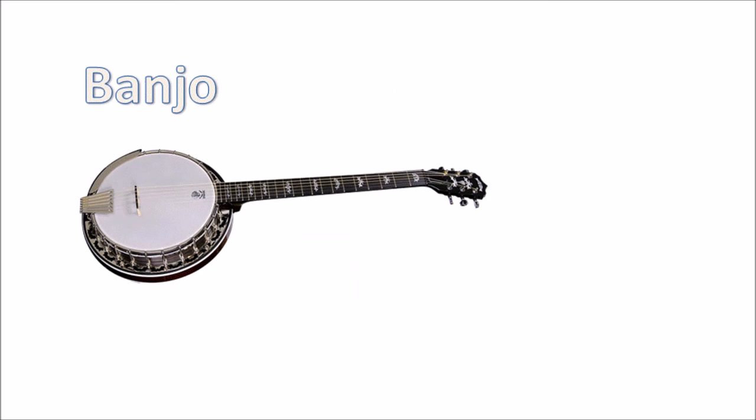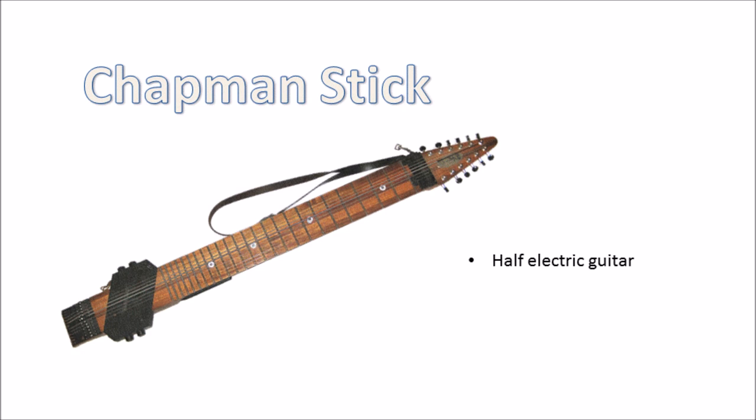Banjos are just like an acoustic guitar except that the front face of the body isn't a solid piece of wood - it's more like a drum skin. As they have steel strings, they may or may not have a truss rod. A Chapman stick? And now you're just showing off.